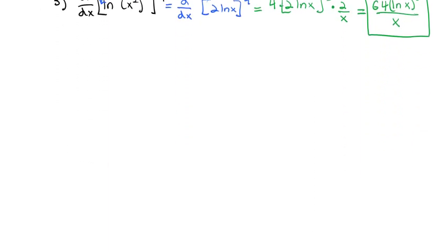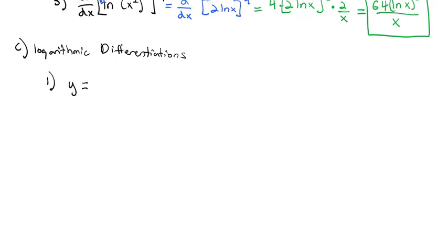That's a quick review of taking derivatives with logarithms. We also did what's called logarithmic differentiation, which was based on implicit differentiation whenever we had the variable in both the base and the exponent, or sometimes just to make more complex expressions simpler. For example, if we had y equals x to the sine of x power and we wanted to find dy/dx, before taking the derivative we would first take the natural log of both sides.